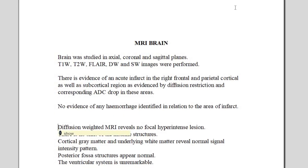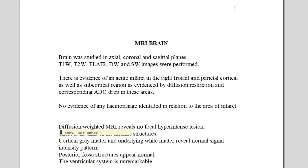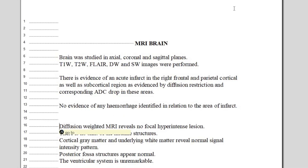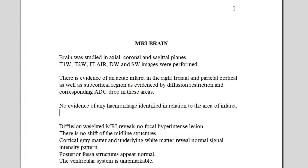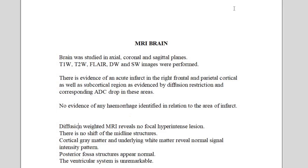Show Line Number. Go to Line Number 14. Periventricular and subcortical white matter FLAIR hyperintensities identified in the frontal and parietal regions, representing chronic ischemic changes. Next line.